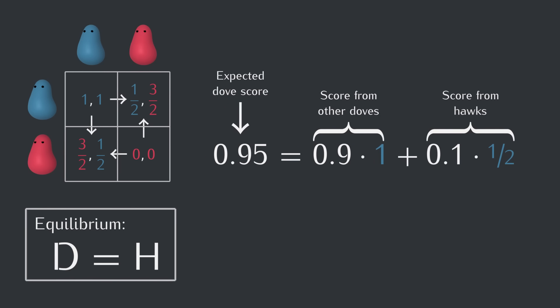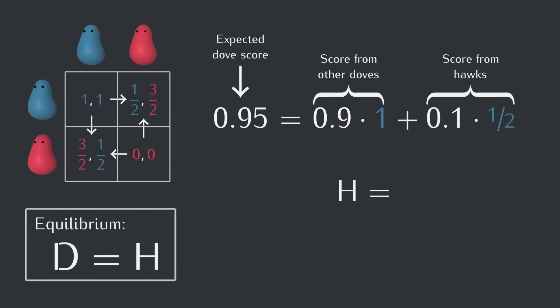This number is pretty meaningless on its own, but once we calculate the expected hawk score, we can compare the two to see whether the equilibrium condition is met. So let's do that. Let's find the expected hawk score. It could be good to pause and try to do this yourself to make sure it all makes sense. Maybe even rewinding to watch the dove part again.